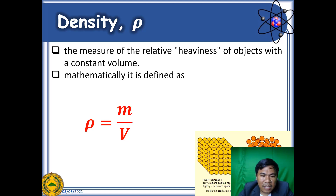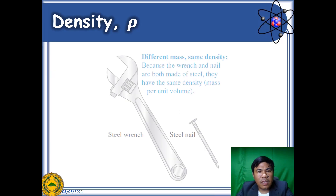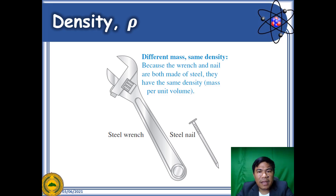If you look at the SI unit for density, it is expressed in terms of kilograms per cubic meter. A common misconception about density happens when one looks at the shape or size of the object rather than the ratio between mass and volume, which is unique for every object due to its unique composition. Hence, one fails to realize that the two objects in this slide have the same density.